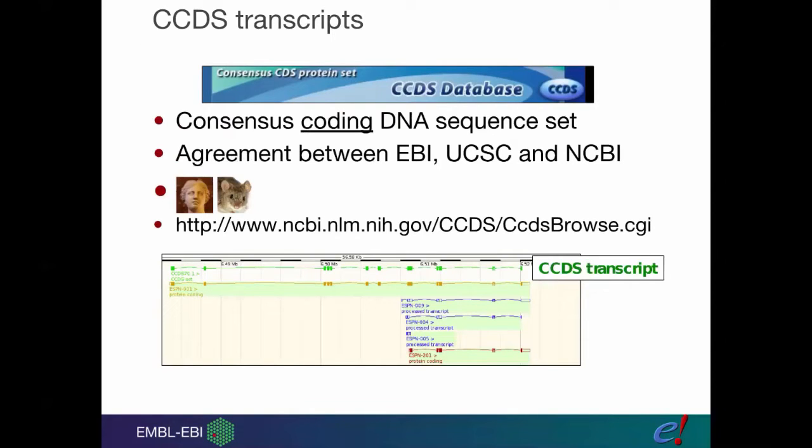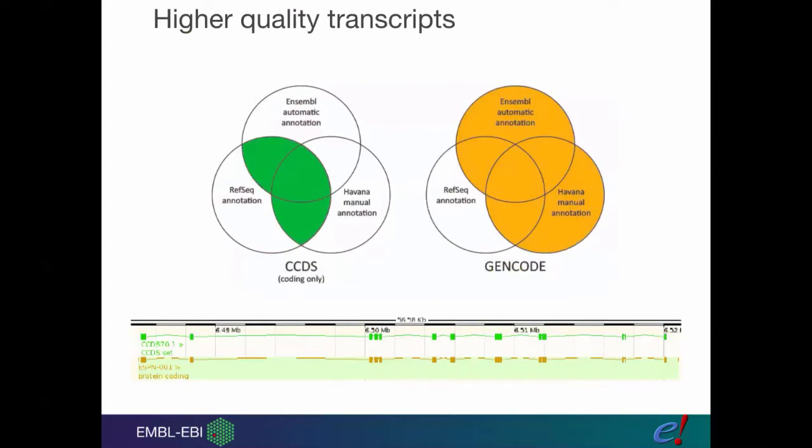We also have something called CCDS, which stands for Consensus Coding DNA Sequence. Again, it's only for human and mouse. It's an agreement between ourselves and RefSeq. Wherever our coding regions, ignoring the untranslated regions, match up with a RefSeq coding region, this transcript will get assigned a CCDS ID. UCSC do the quality control on this as well. If you're looking at high quality transcripts, you want to find the gold ones and the ones with the CCDS, because these are where more different groups and methods agree.